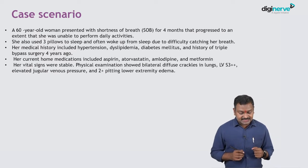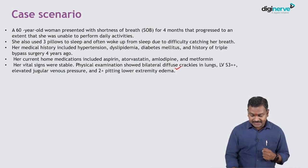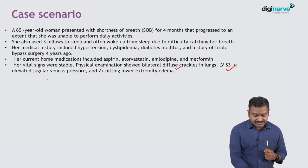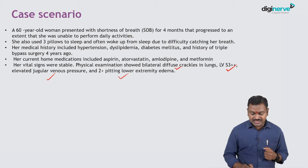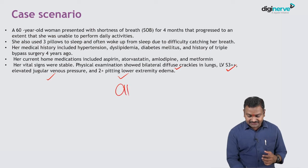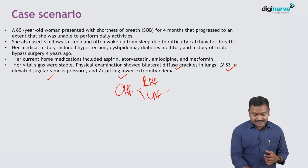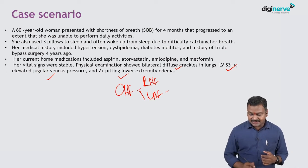When you examine her, vital signs are stable. Physical examination reveals bilateral diffuse crackles at the bases, an LV S3 is present, elevated jugular venous pressure, and 2+ pitting edema. She has basal crepitations and S3, which are signs of left heart failure, and pedal edema and raised JVP, which are suggestive of right heart failure.